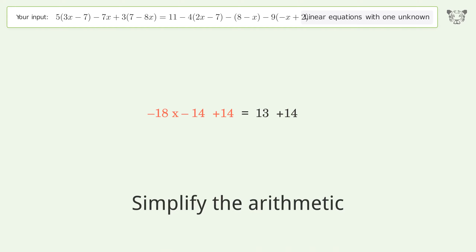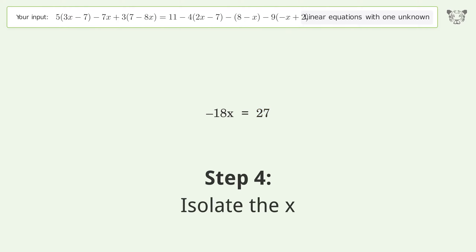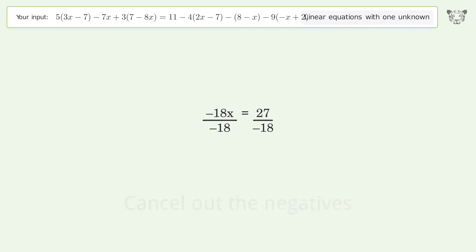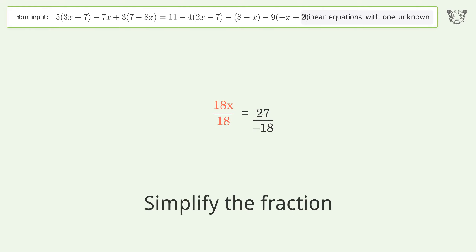Simplify the arithmetic. Isolate the x — divide both sides by negative 18. Cancel out the negatives. Simplify the fraction.